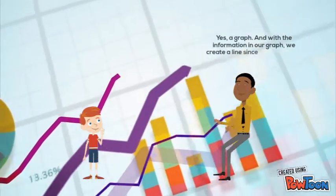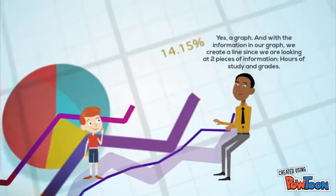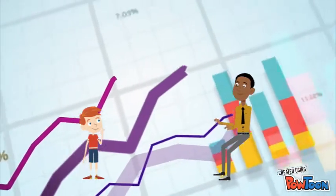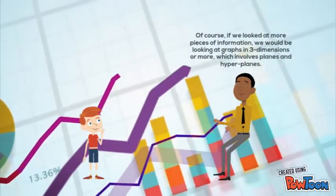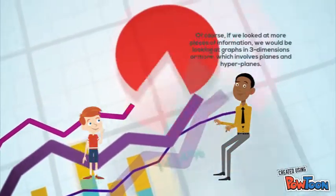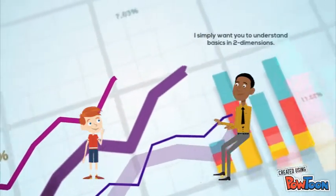And with the information in our graph, we create a line since we are looking at two pieces of information, hours of study and grades. Of course, if we looked at more pieces of information, we would be looking at graphs in three dimensions or more, which involves planes and hyperplanes. I simply want you to understand the basics in two dimensions.